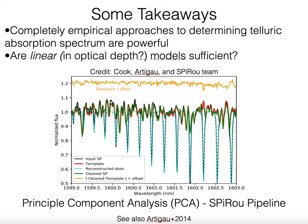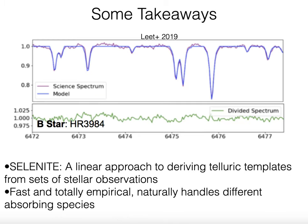One question is whether linear models in optical depth are really sufficient in the near-infrared, where we're dealing with lines spanning a wide range of absorption strengths. Another nice data-driven empirical approach is a 2019 paper by Lied et al. called Selenite—a linear code to derive telluric templates from a set of stellar observations. It's fast, totally empirical, and naturally handles different absorbing species. I think there's a lot of enthusiasm for these types of approaches.